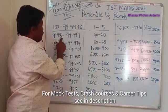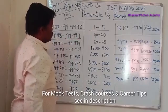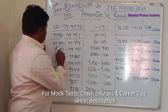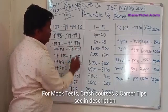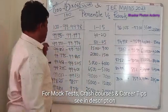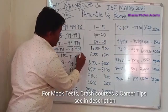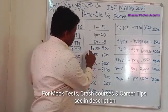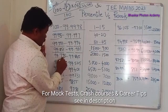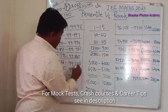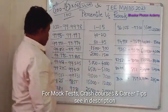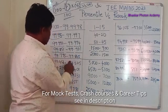Percentile range 99.9997 to 99.9995 corresponds to ranks approximately 20 to 40. Percentile range 99.9994 to 99.990 corresponds to ranks approximately 45 to 82. Percentile range 99.901 to 99.851 corresponds to ranks in the range of approximately 900 to 1500. Percentile range 99.845 to 99.795 corresponds to ranks approximately 1500 to 2000.